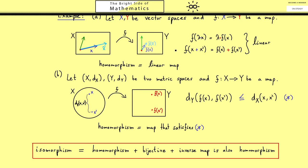Going back to the two examples we had before, we now know what an isomorphism is for vector spaces. It's just a bijective linear map because the inverse of a linear map is always linear. And for the metric spaces we have a map that is also bijective and it fulfills star but also needs to fulfill star in the other direction, which means now we actually have the equality here.